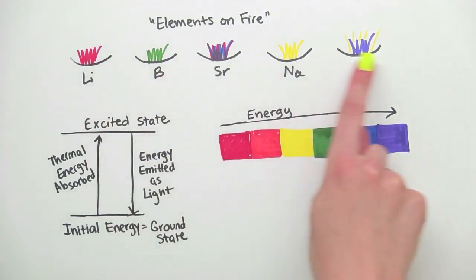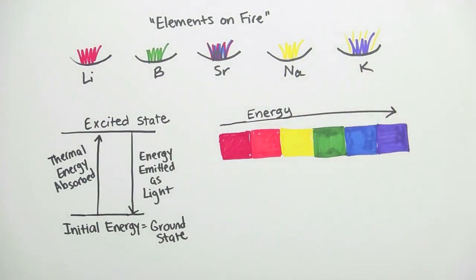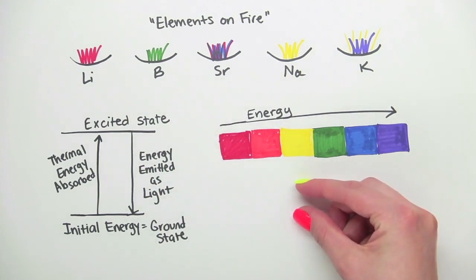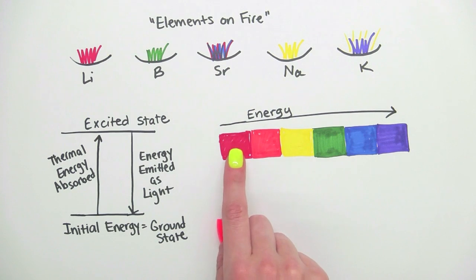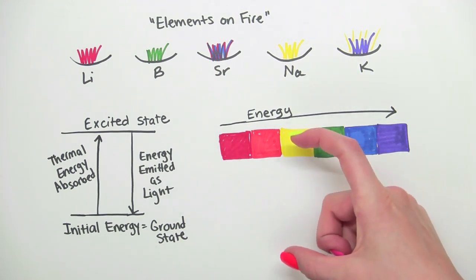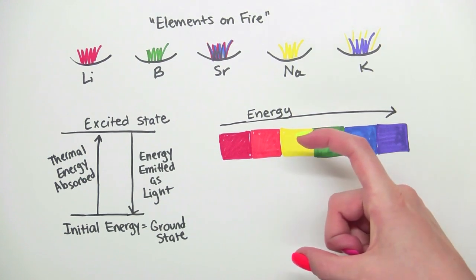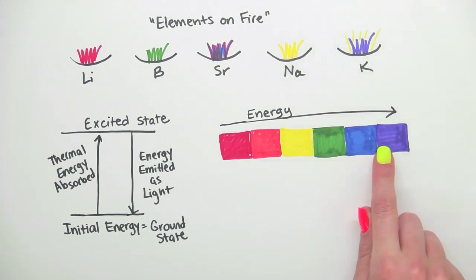Going back to our atoms energy levels. If the difference between the ground state and the excited state is smaller, the light particle is of lower energy, and we see that as redder light. Conversely, if the energy gap is larger, the light particle is of higher energy, and we see that as bluer light.